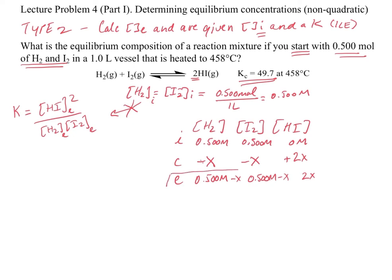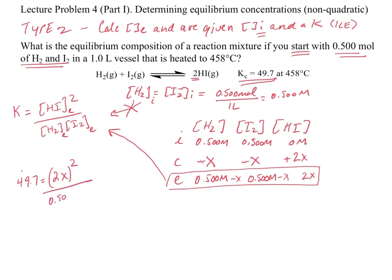Now we take these equilibrium values and plug them into our K equation. Our K is 49.7, equal to (2X)² divided by (0.500 molar minus X) times (0.500 molar minus X). Since both denominator terms are identical, we can simplify: 49.7 equals (2X)² divided by (0.500 molar minus X)². This is why having equal initial concentrations matters — it turns the denominator into a squared term.